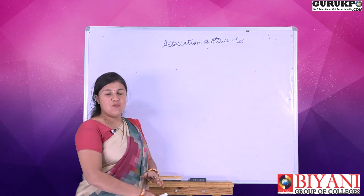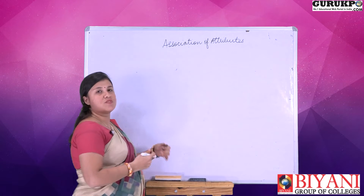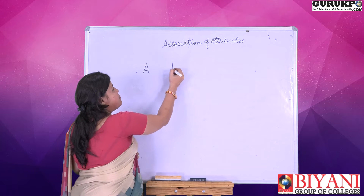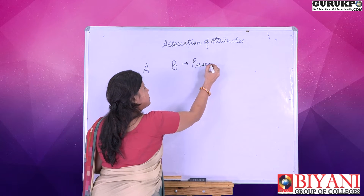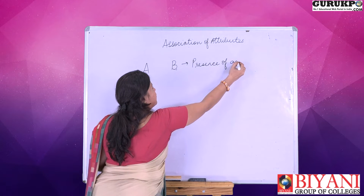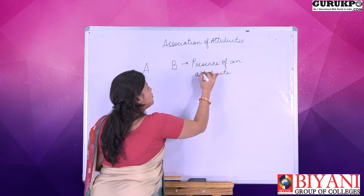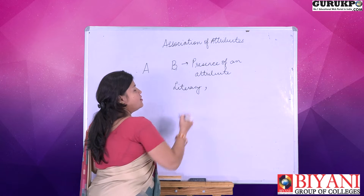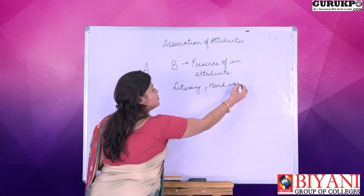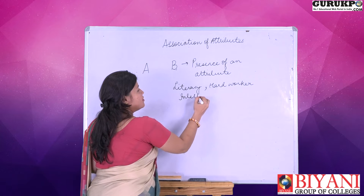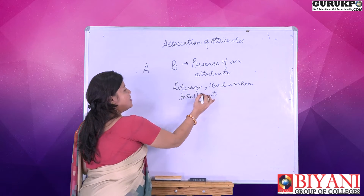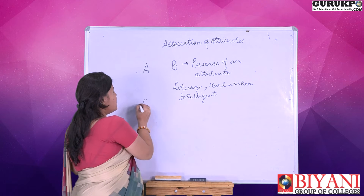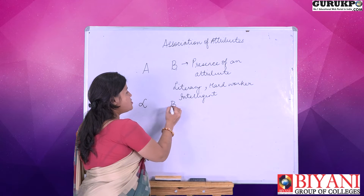Now, what are attributes? There are two types of attributes: one which shows the presence of a particular concept, and the other which shows the absence. A and B can be taken to show the presence of any attribute — for example, literacy level, being a hard worker, or an intelligent person. If we want to show the absence of an attribute, for A the absence is shown by alpha, and for B the absence is shown by beta.